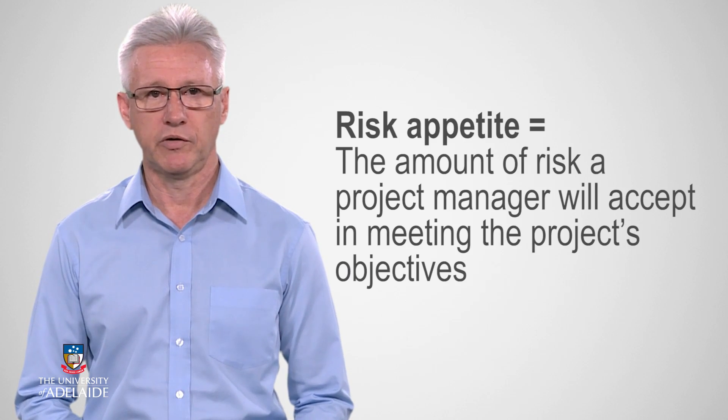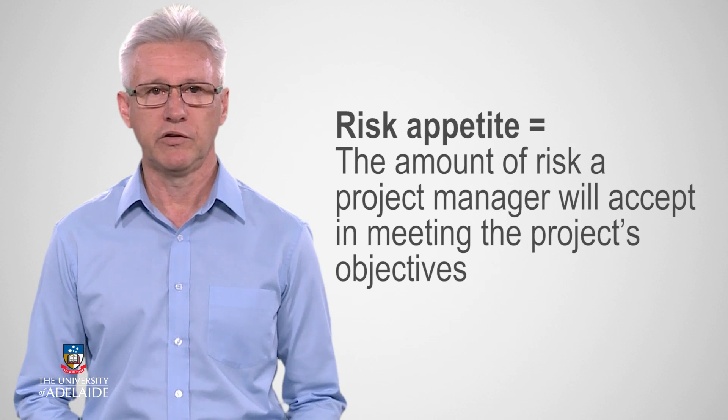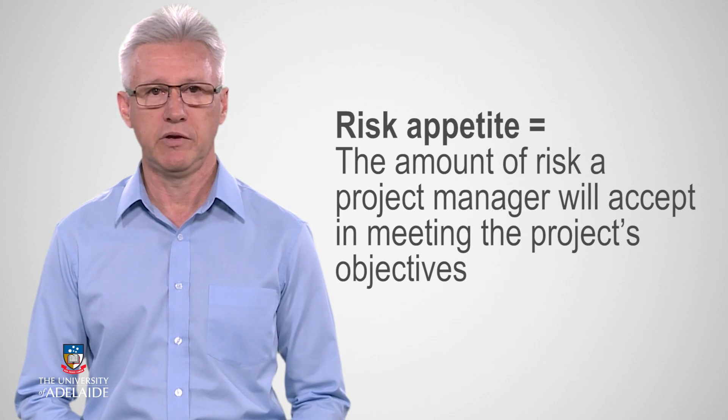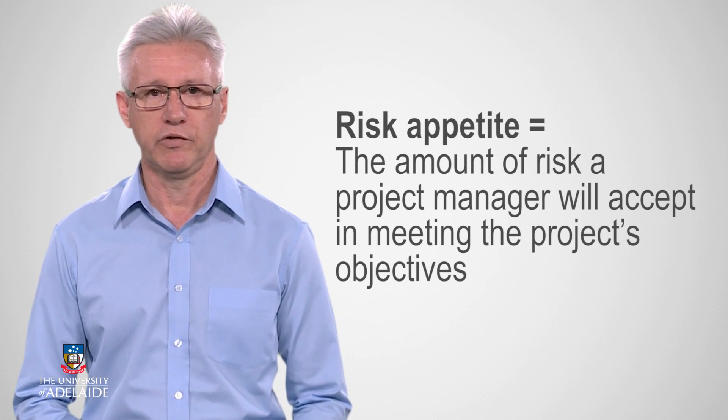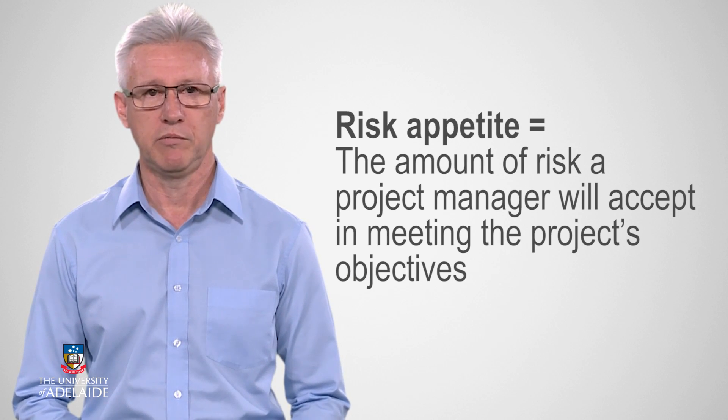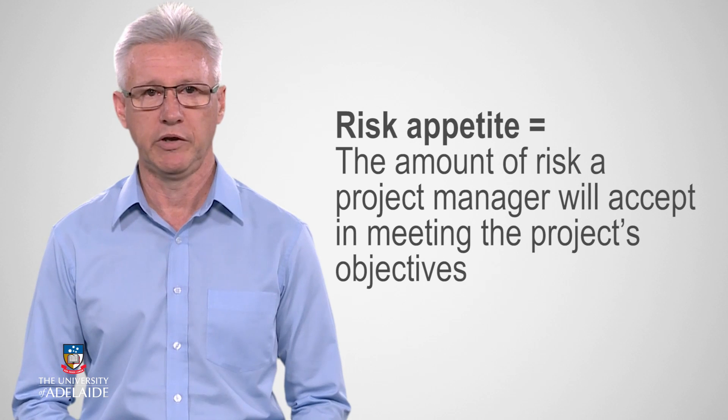Remember that the risk cannot be eliminated completely, and controls are designed to treat or reduce the risk to an acceptable level. We discussed this acceptable level in the previous video and referred to it as the risk appetite, which is generally understood to be the amount of risk a project manager will accept in meeting the project's objectives.